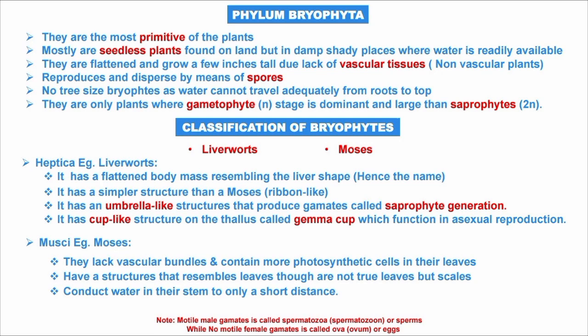Class two is mosses. Mosses lack vascular bundles and contain more photosynthetic cells in their leaf-like structures — not true leaves, but called phylloids. They conduct water in their stem only a short distance. Motile male gametes are called spermatozoa or sperm, while non-motile female gametes are called ova or eggs.